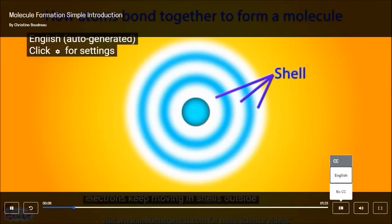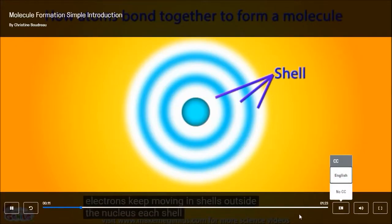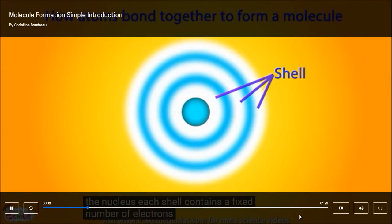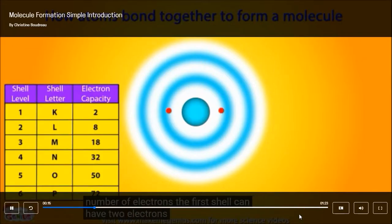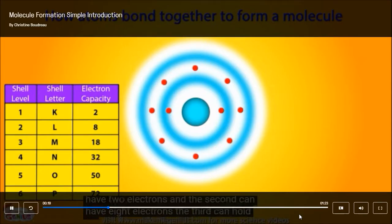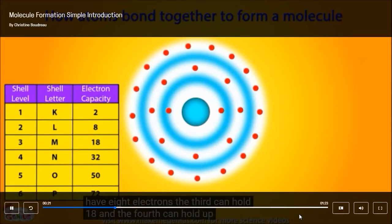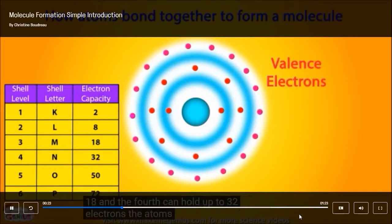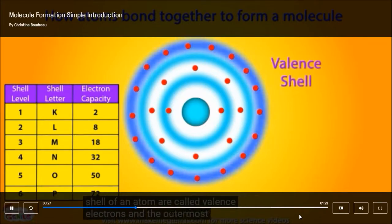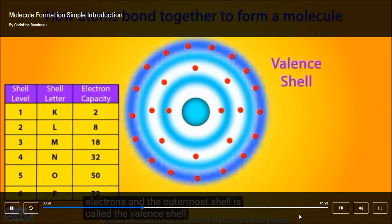Electrons keep moving in shells outside the nucleus. Each shell contains a fixed number of electrons. The first shell can have two electrons, and the second can have eight electrons. The third can hold 18, and the fourth can hold up to 32 electrons. The electrons in the outermost shell of an atom are called valence electrons, and the outermost shell is called the valence shell.